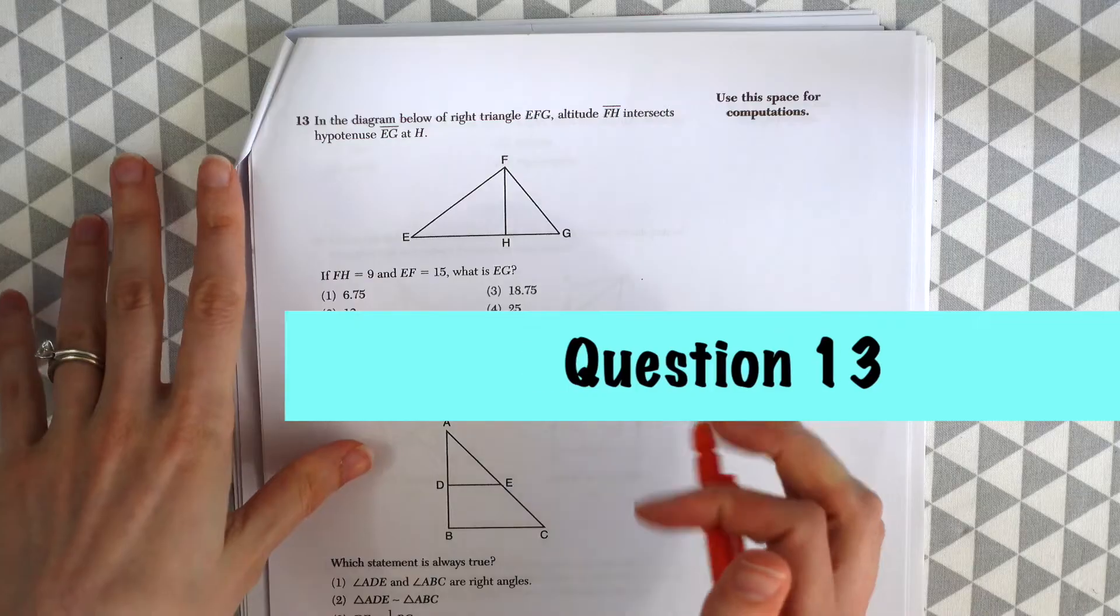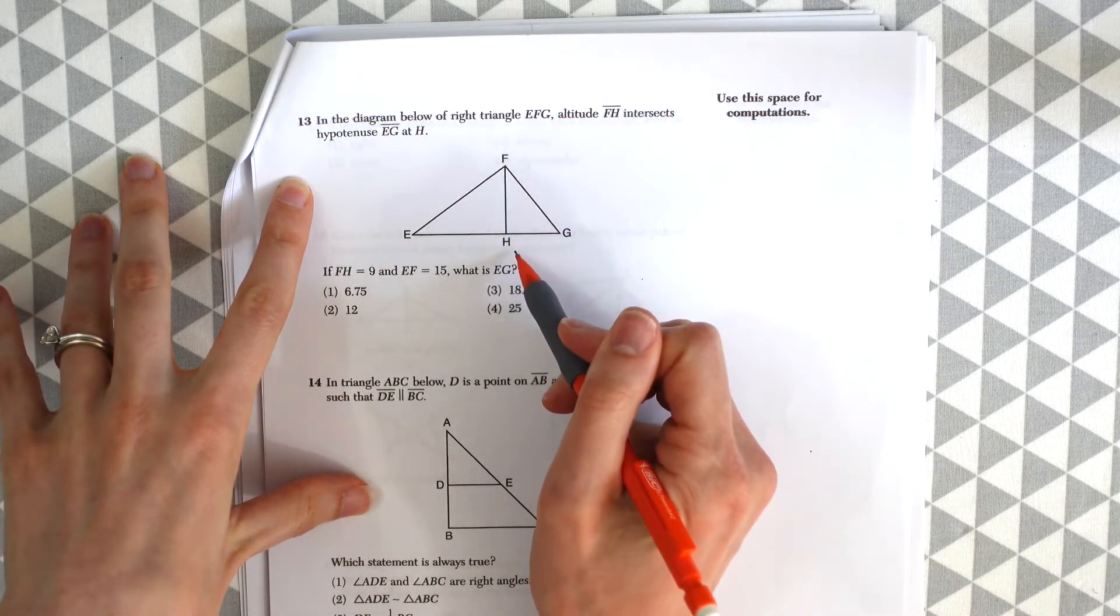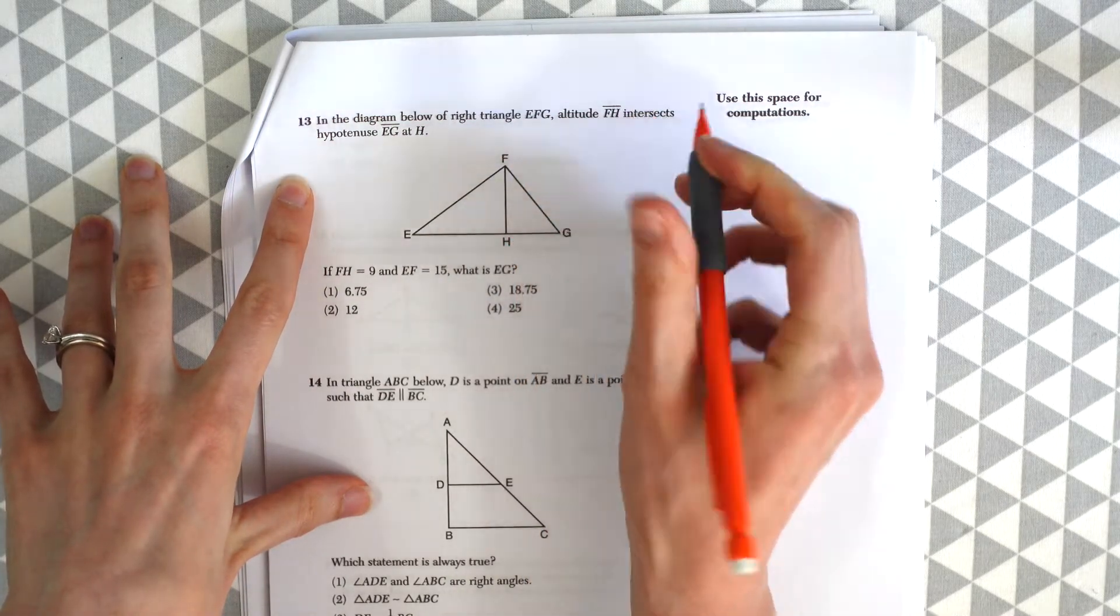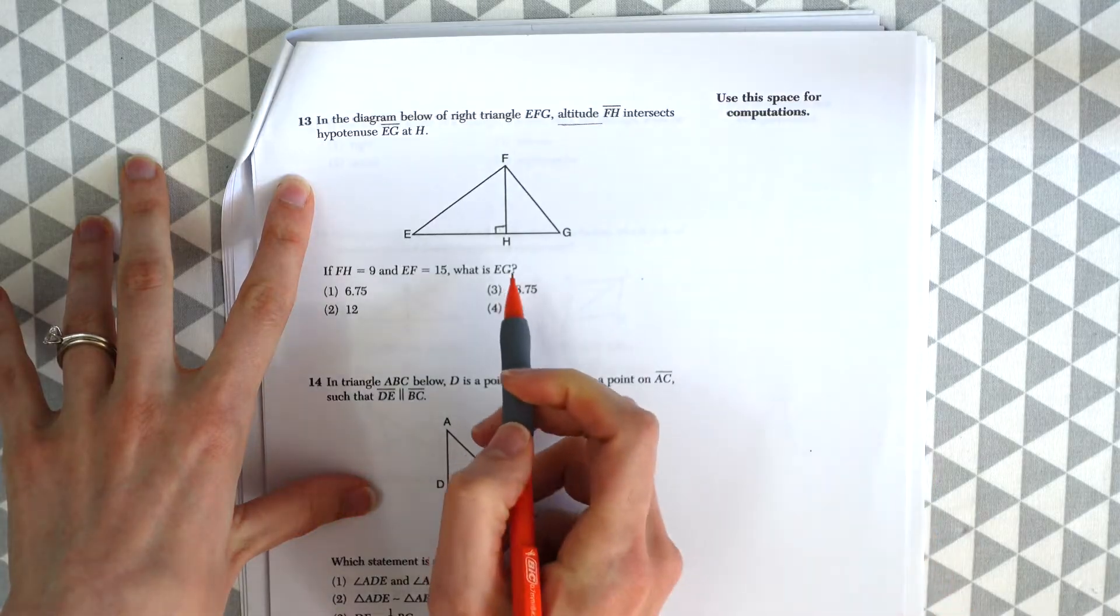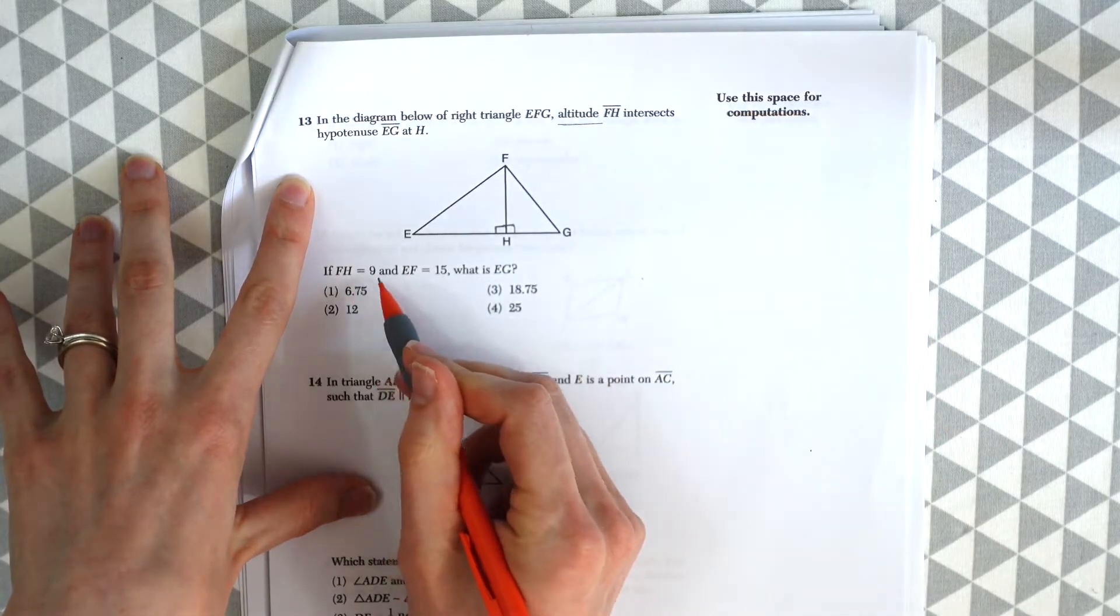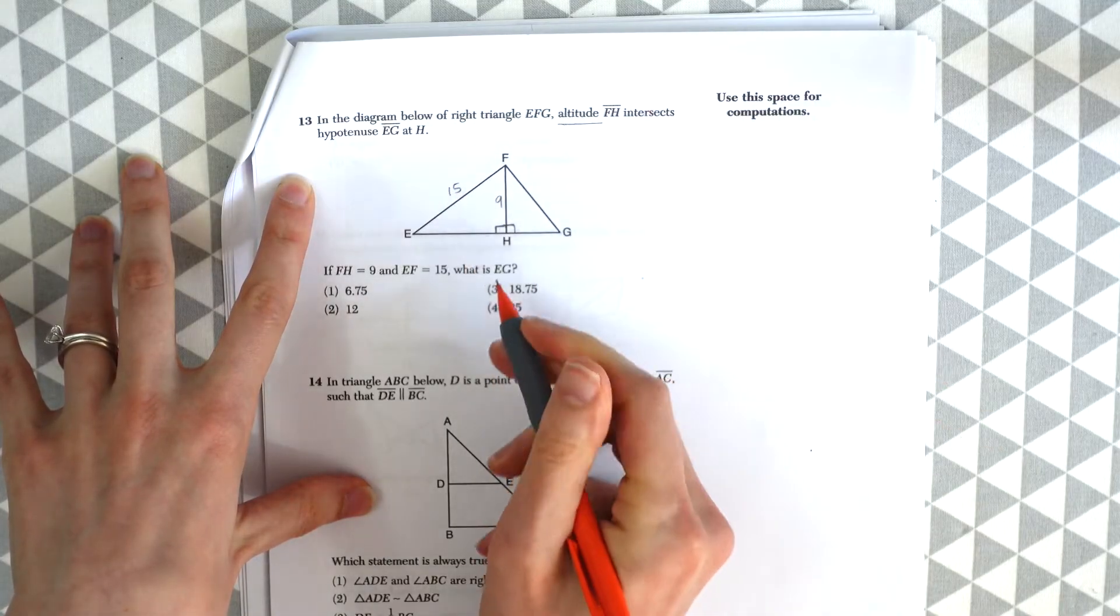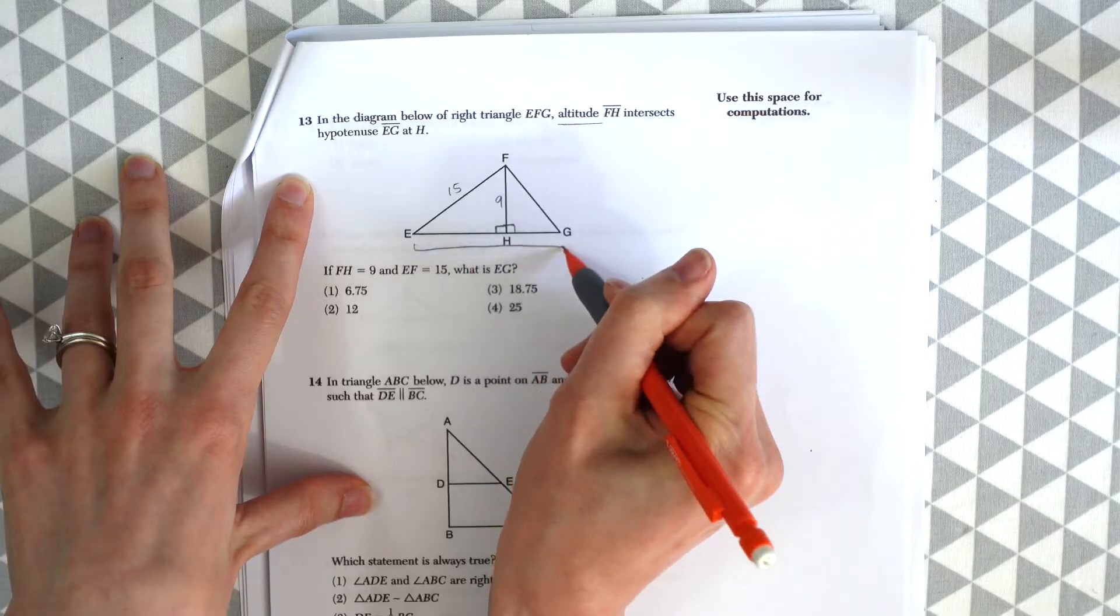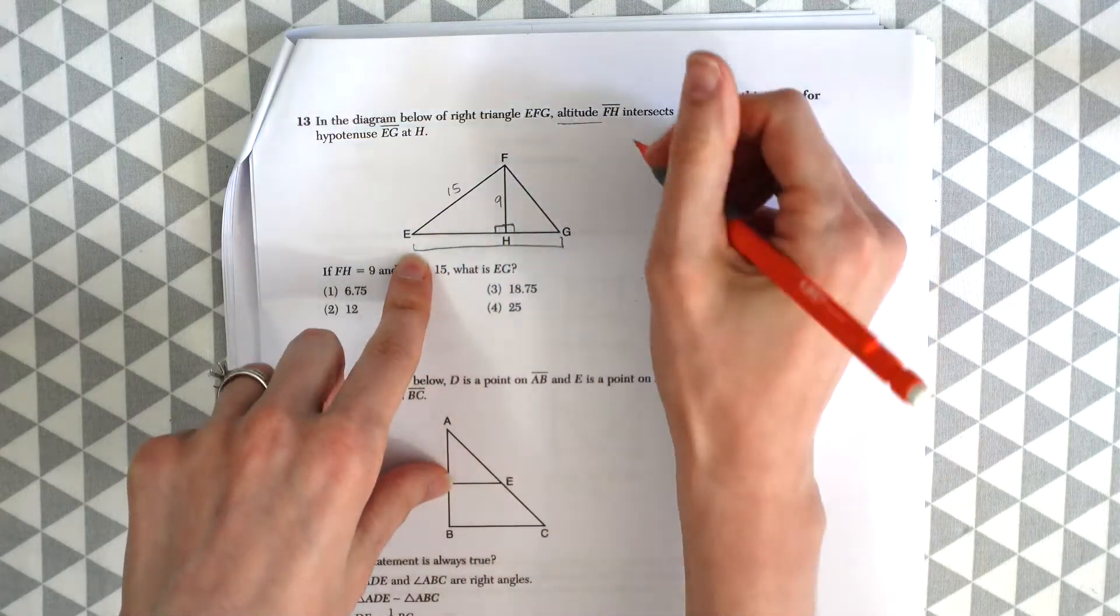On to question number 13. In the diagram below of right triangle EFG, altitude FH intersects hypotenuse EG. So whenever we see altitude, we know that this is going to be a right angle at H. So this whole thing is a right angle. FH equals 9, EF equals 15. What is EG? So we want to find this length here. Just basic Pythagorean theorem, we could find EH right here. So let's just do that.